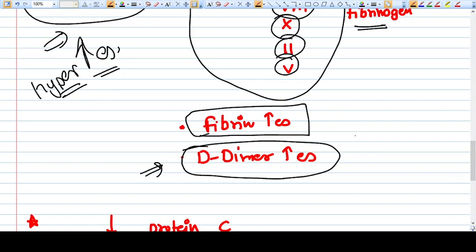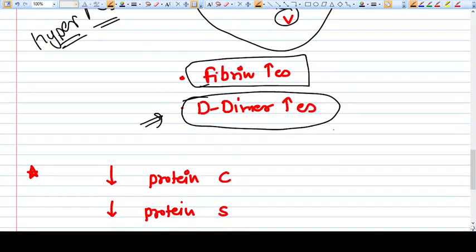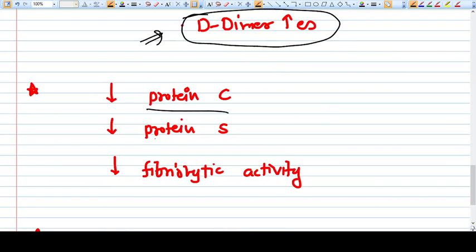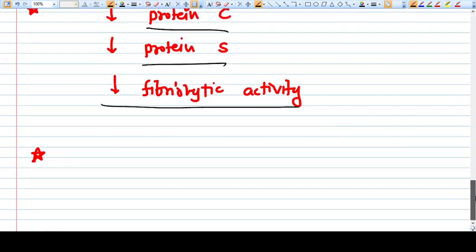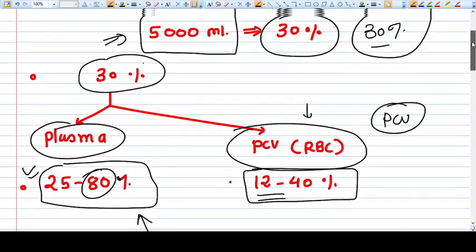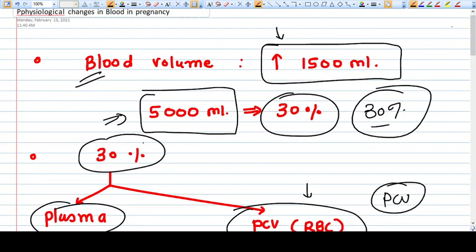So yes, it increases in pregnancy, whereas the protein C, protein S and fibrinolytic activity will be decreased. So all over hypercoagulable state will be there in the pregnancy. So these are the changes you need to read this thing repeatedly so that you remember this thing very efficiently. Thank you friends.